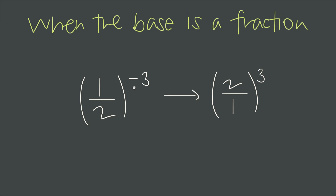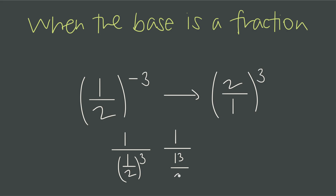The reason is because we can think about this in intermediate steps using the same take-the-reciprocal rule. We rewrite this as 1 divided by (1/2) to the positive 3, then apply the 3 to numerator and denominator separately: 1 divided by (1 cubed over 2 cubed). Dividing by a fraction is the same as multiplying by the reciprocal, so this equals 1 multiplied by (2 cubed over 1 cubed). Multiplying by 1 doesn't change the value, and 2 cubed over 1 cubed can be written as (2 over 1) quantity cubed. Going forward, we can just flip the fractional base, take its reciprocal, and change the exponent from negative to positive.